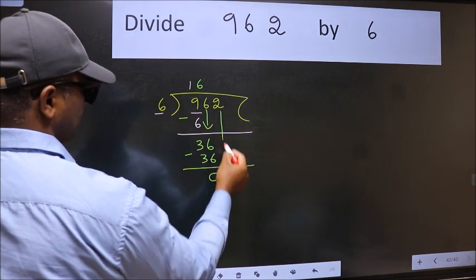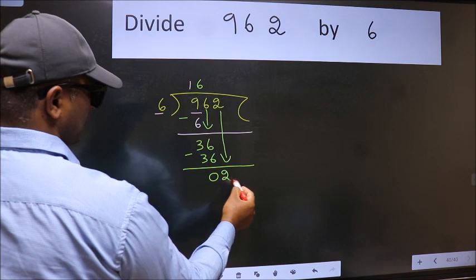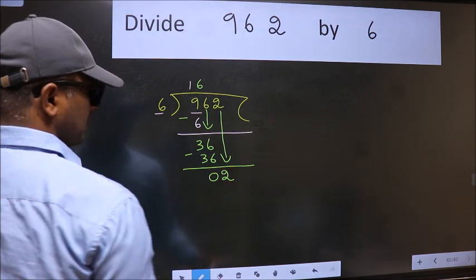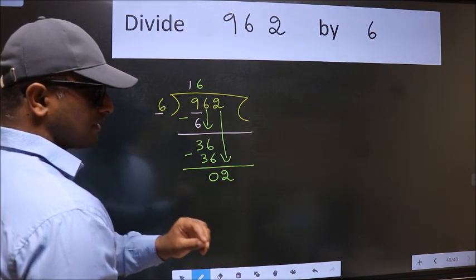After this, bring down the beside number. So 2 down. After this step, the mistake happens. And the mistake is this.